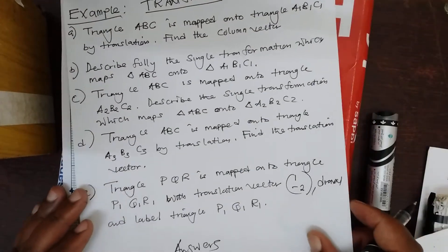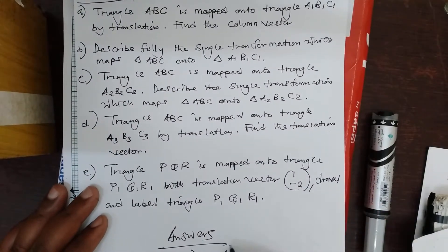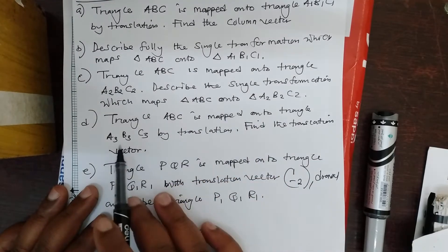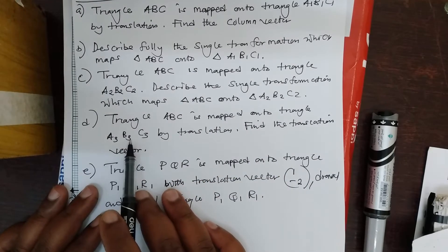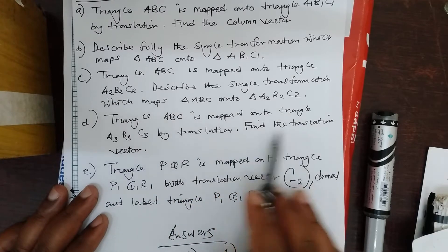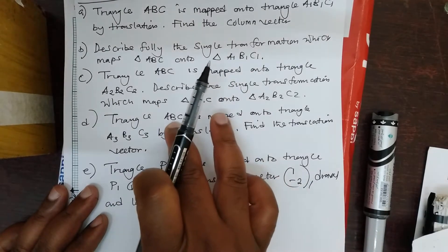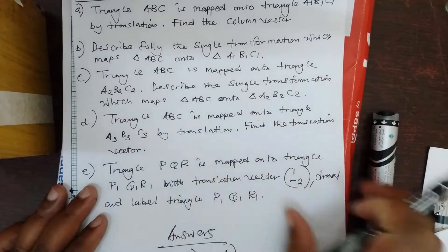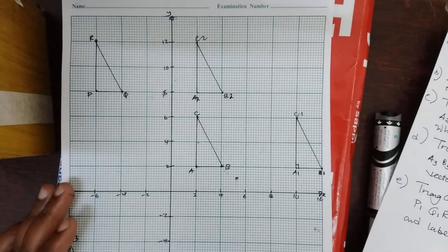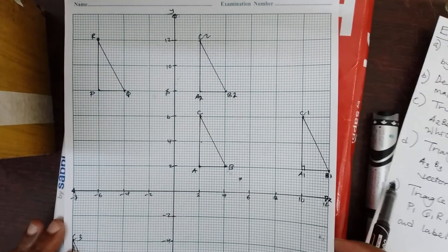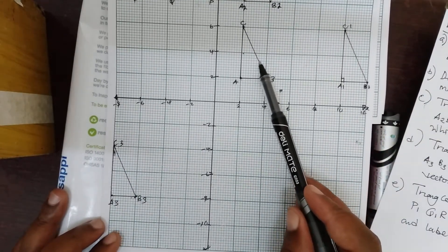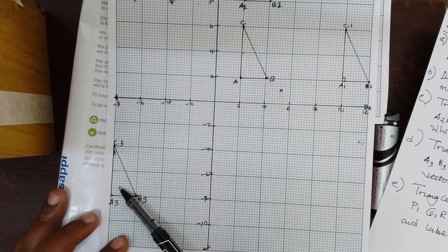We go to D. Triangle ABC is mapped onto triangle A3, B3, C3 by translation. Find the translation vector. We must look at A, B, C and A3, B3, C3. There is another triangle here. This triangle is mapped onto that triangle by translation. Can we find the translation vector? You can just look at C and its image.